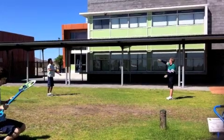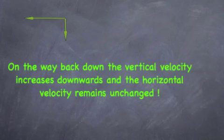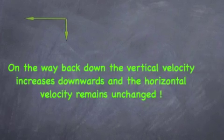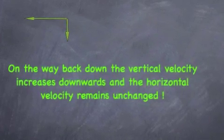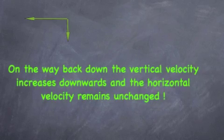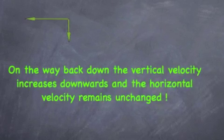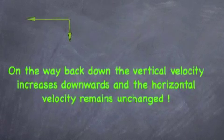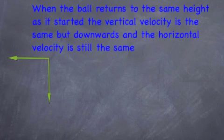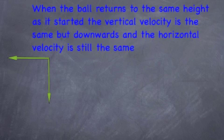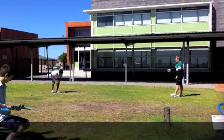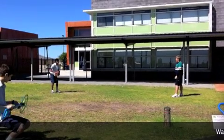Gravity starts to take effect now and pulls the ball downward. The horizontal velocity is still the same, but the vertical velocity is increasing. Once it reaches back to the same height it was, the vertical velocity is now the same as it was before but in the opposite direction, and the horizontal velocity is still the same.